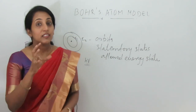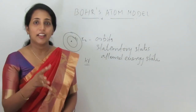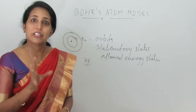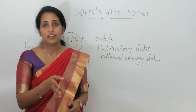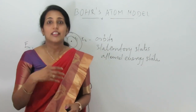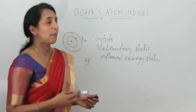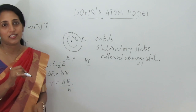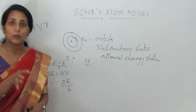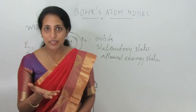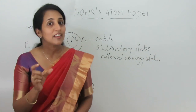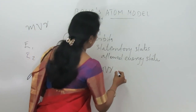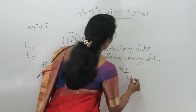The fourth postulate is about the angular momentum. Since the electron's motion is circular, the electron possesses angular momentum. This angular momentum is represented by MVR, where M is mass, V is velocity, and R is the radius of the orbit. According to Bohr's model, the angular momentum possessed by an electron is an integral multiple of h by 2π.